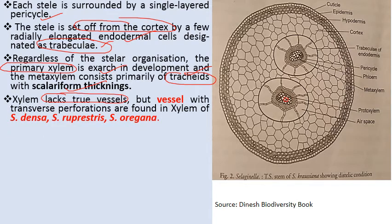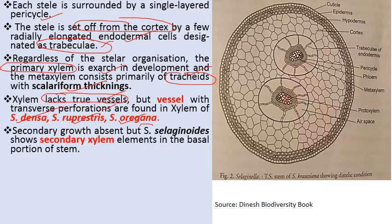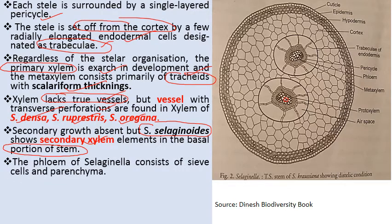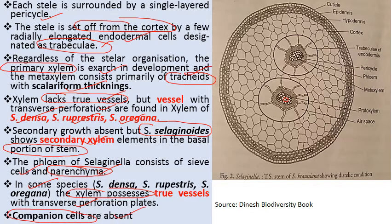True vessels are absent in Selaginella, but vessels with transverse perforations are found in Selaginella densa, Selaginella rupestris, and Selaginella oregana. Secondary growth is absent, with one exception: Selaginella selaginoides shows secondary xylem elements in the basal portion of the stem. The phloem of Selaginella consists of sieve cells and phloem parenchyma only — companion cells are absent.